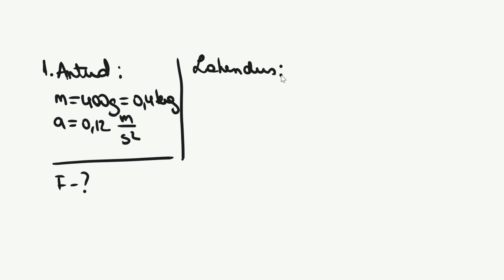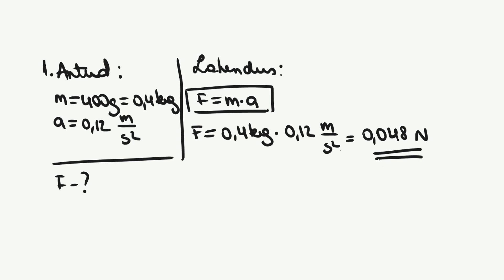Kõigepealt kirjutame välja andmed. Teisendame kõik väärtused SI-süsteemi ühikutesse. Et ühes kilogrammis on 1000 grammi, tuleb 400 jagada tuhandega. Saame 0,4 kilogrammi. Meilt on küsitud, kui suurt jõudu mängija rakendas. Kasutame asjakohast valemit F võrdub M korda A. Asendame andmed valemisse ning arvutame. Ja saamegi vastuse, et jõud mida mängija palli löomisel rakendas oli 0,048 Newtonit.